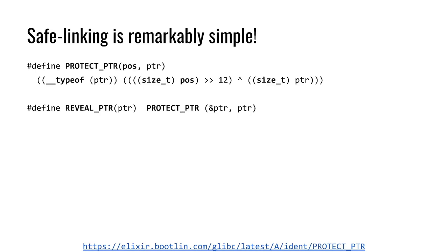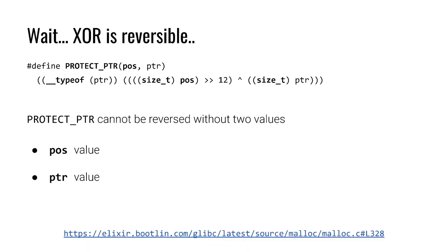Now, what do we know about the actual implementation that an attacker can exploit? XOR is reversible, but for protect_pointer, I need two values: the position value and the pointer. So protect_pointer cannot be reversed without both values — I need to know both in order to reason about how to XOR it.